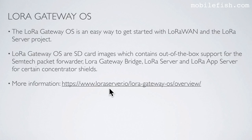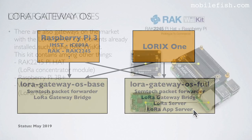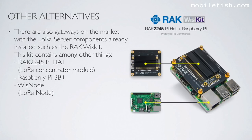There are a number of concentrator shields which use the Raspberry Pi 3. For these, two different SD card images are available: LoRa Gateway OS Base, which only contains the Semtech Packet Forwarder and LoRa Gateway Bridge; and LoRa Gateway OS Full, which has out-of-the-box support for Semtech Packet Forwarder, LoRa Gateway Bridge, LoRa Server, and LoRa App Server. There are also gateways on the market with LoRa Server components already installed, such as the Rack WizKit, which contains the Rack 2245 Pi head concentrator module, the Raspberry Pi 3B Plus, and the Wiz node LoRa node.